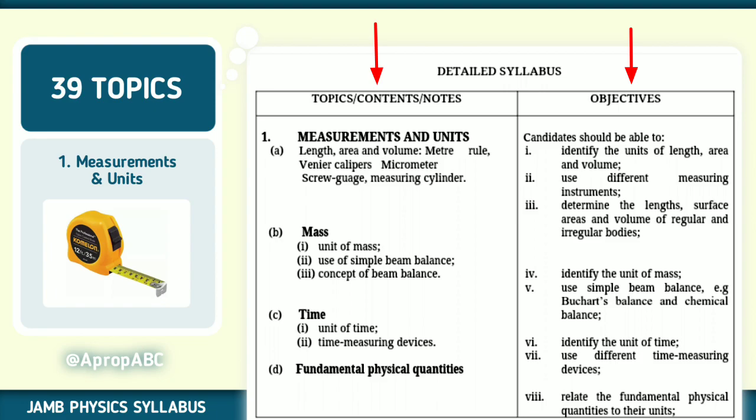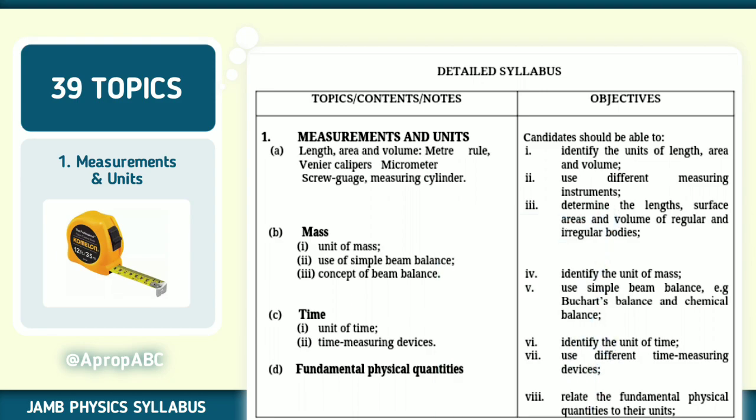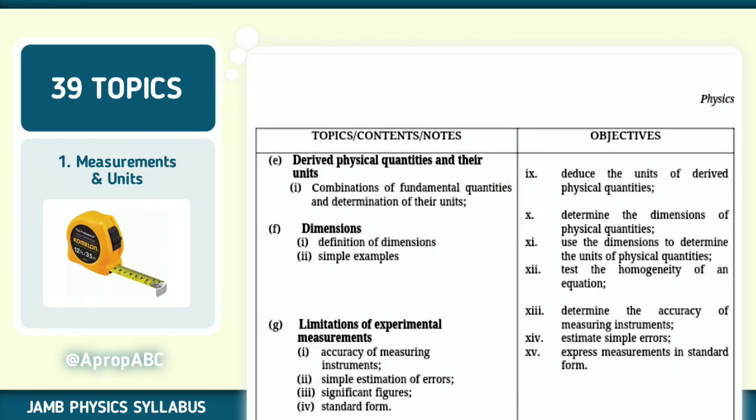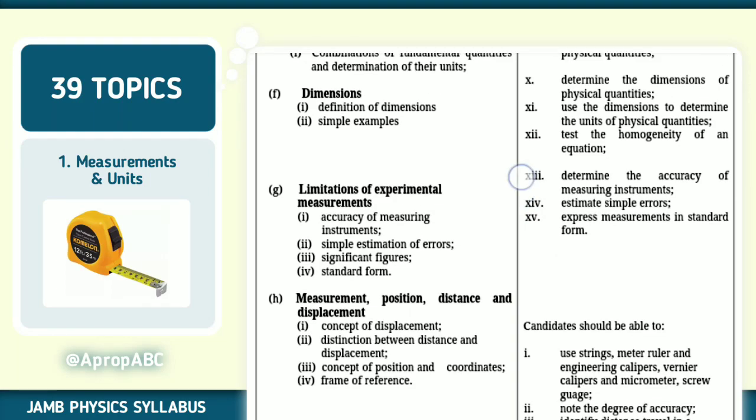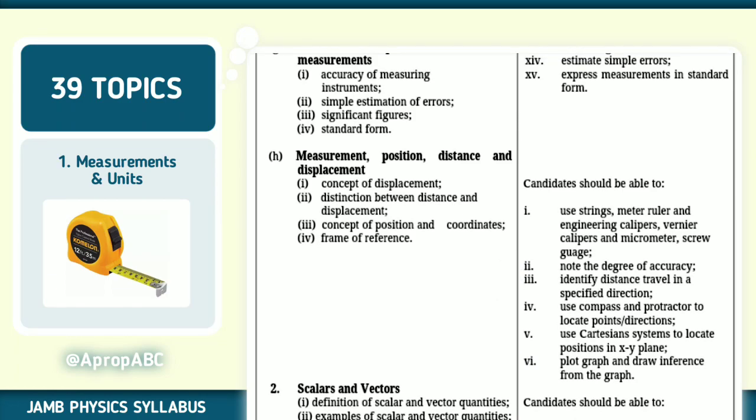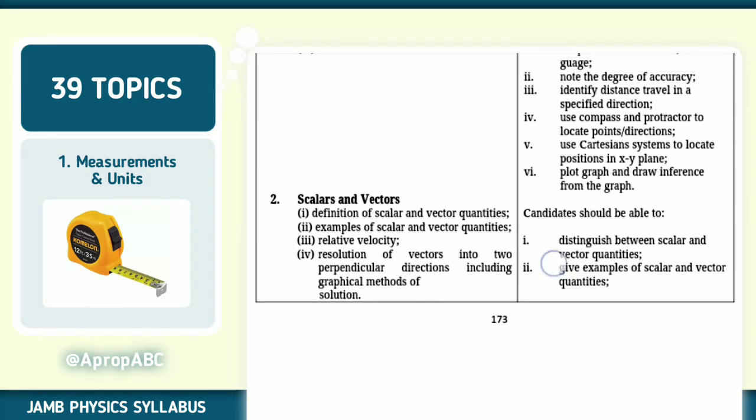So for measurements and units, you can dust your SS1 notes. And if you don't have a good note, check out the recommended textbooks I will show you at the end of this video. Length, area and volumes, meter rule, vernier caliper. Note all of these things. Then mass, time, fundamental physical qualities. Then derived physical quality, dimension. Limitation of experimental measurement. Position, distance, displacement. What is the difference between distance and displacement? Check that out and note the objectives under some of these questions.